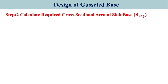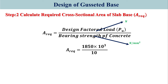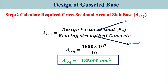Step 2: Calculate required cross-sectional area of the slab base. A required equals design factored load divided by bearing strength of concrete: 1850 × 10³ divided by 10, giving 185,000 millimeter square. So the required area is 185,000 mm².